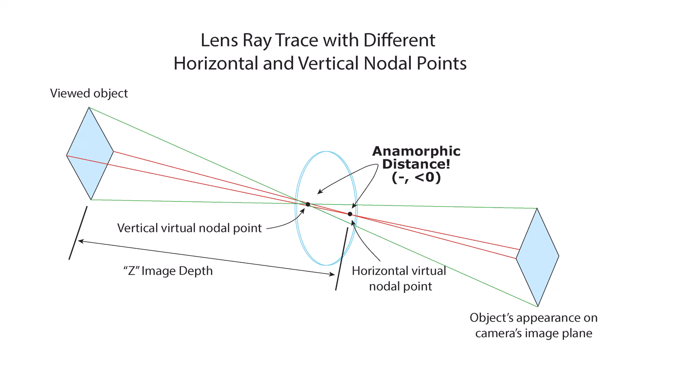Now that you see those two different nodal points, you can see how that can explain another common anamorphic lens quirk, where horizontal and vertical edges can have different optical sharpnesses. You can see how different motions of the two nodal points could explain why the image aspect ratio changes when you pull focus, another common anamorphic effect.